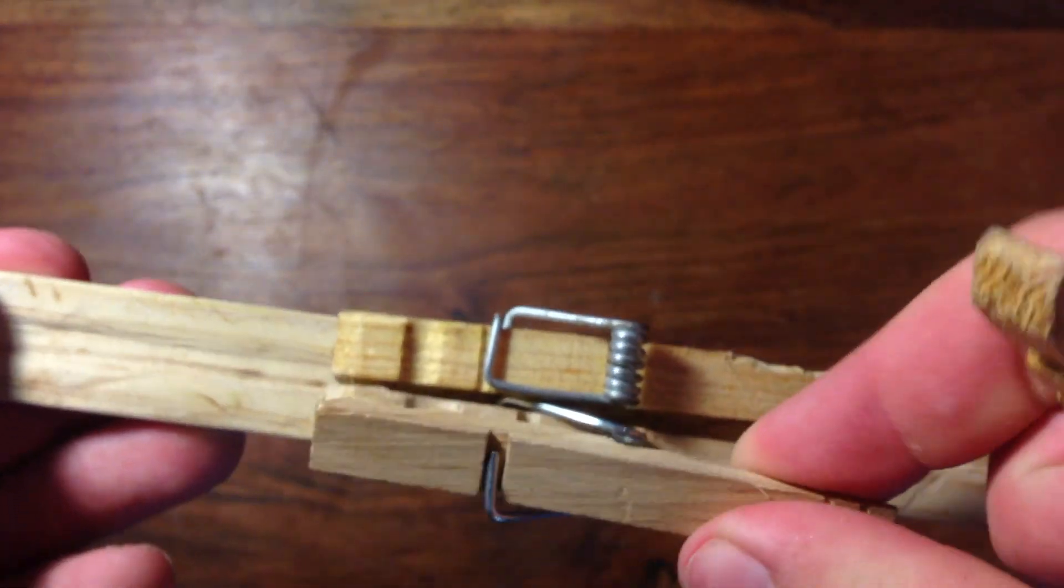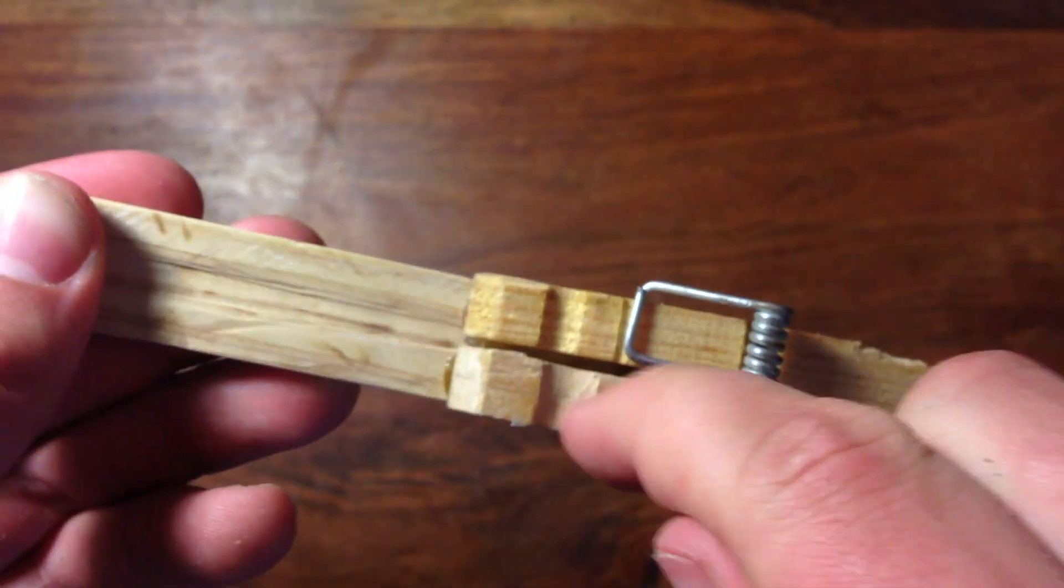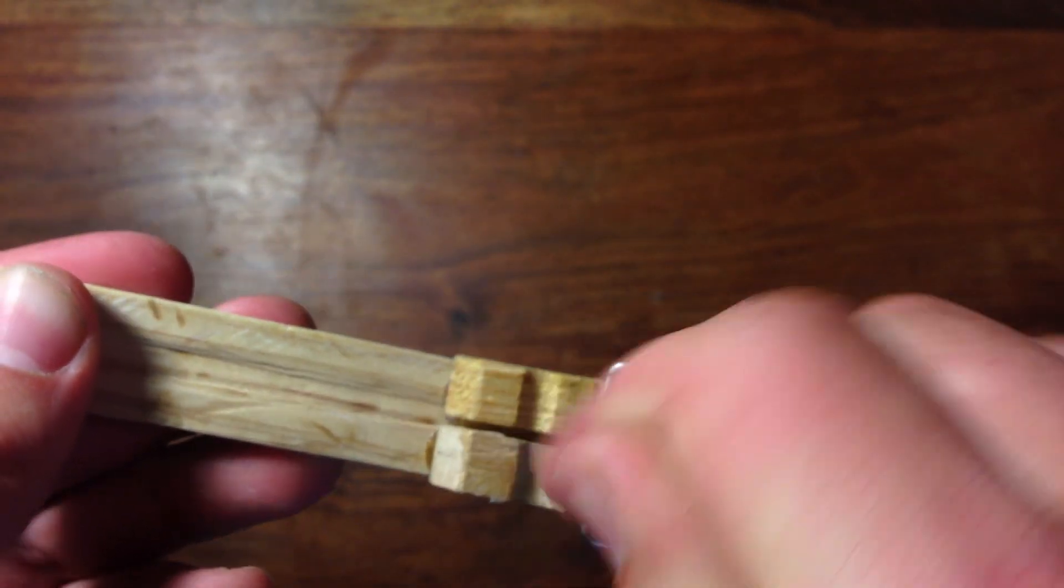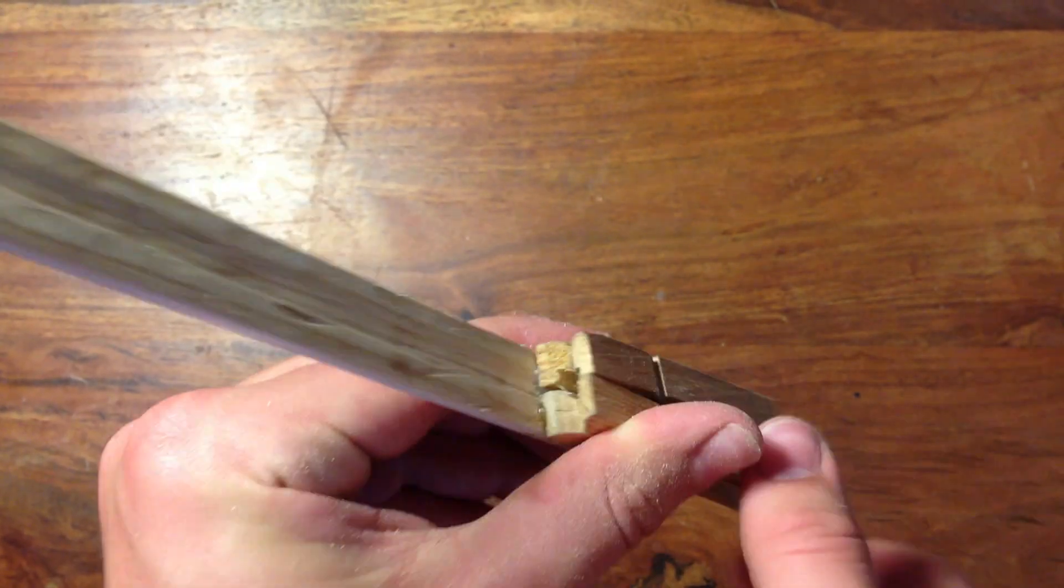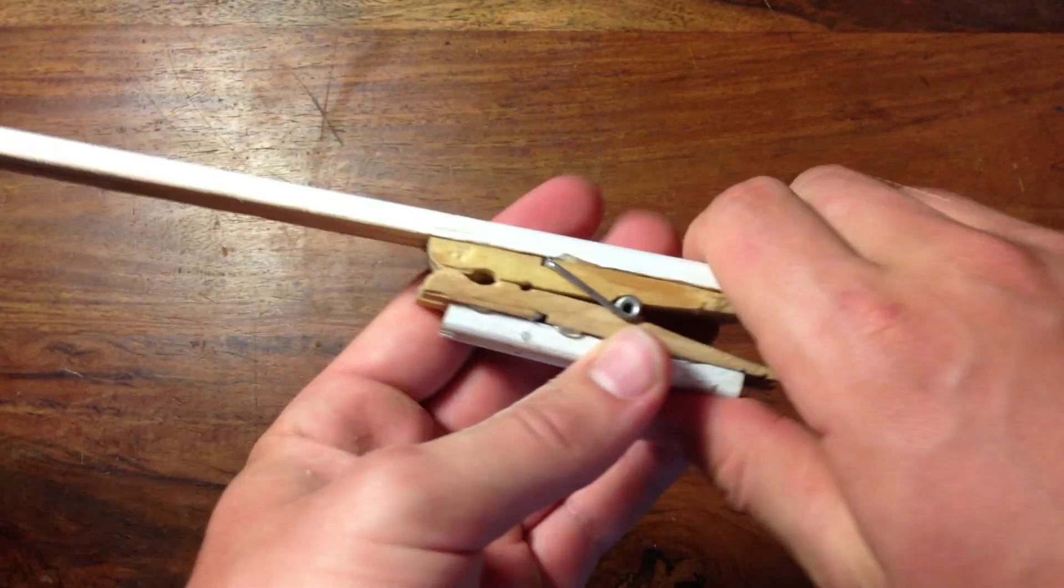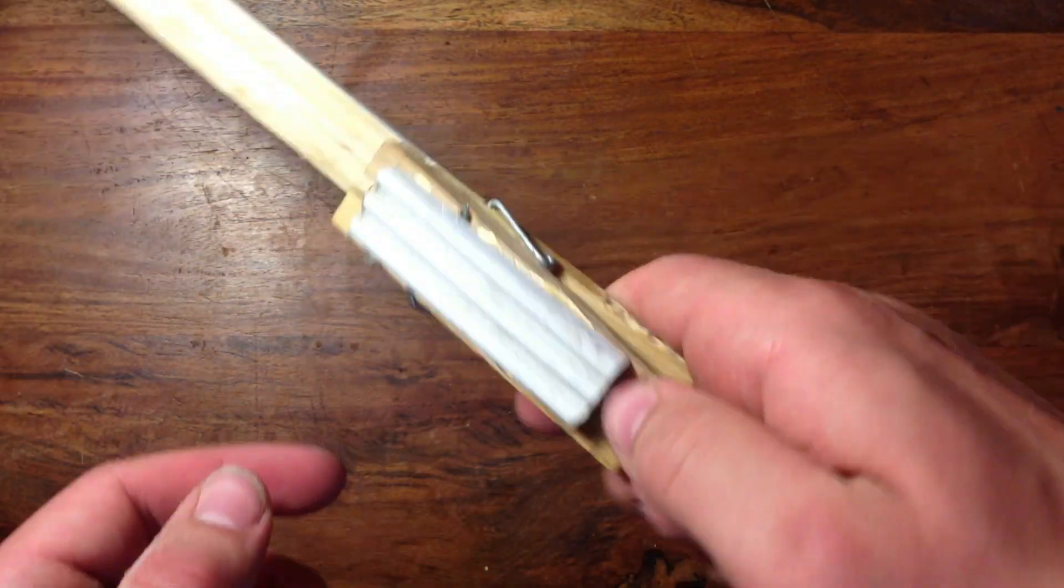Then remove the tops of the clothespins and cut four small grooves on each of the insides of the clothespins. It should look like this when you're done with a hole in the middle of the four clothespins. Then take the last small piece of wood and glue it under the top of the two clothespins.